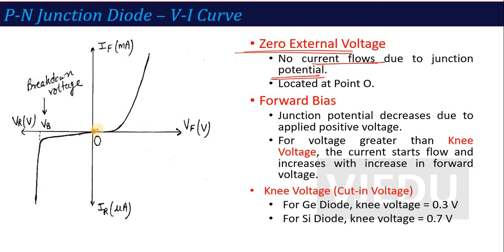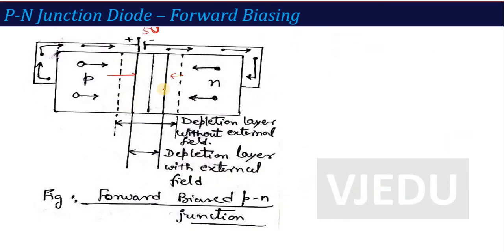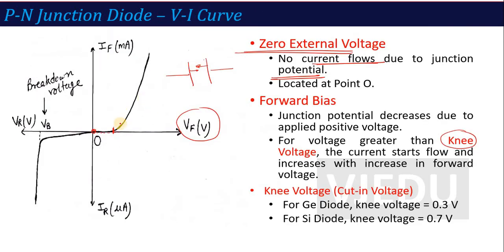As you increase the forward voltage, the depletion layer decreases. At one particular point, the depletion layer will vanish — that particular point is called the knee voltage. When you go above this particular voltage, the depletion layer ends, there is no depletion layer, and current starts flowing from negative to positive terminal. As you increase the voltage further, your current will rise.